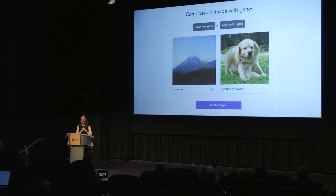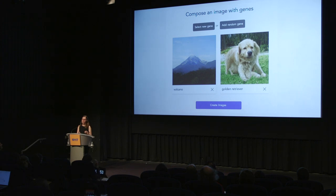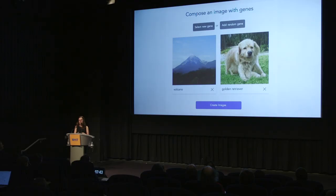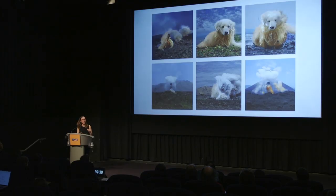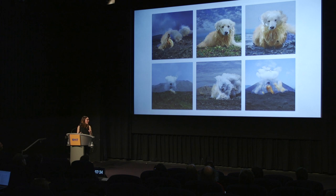Basically, all these images from ImageNet were classified into different categories, and those categories are turned into models. So a computer can generate what a typical volcano is or a typical golden retriever is — there are a thousand categories. Not only can it do individual categories, but it can merge categories together, so I can create a volcano golden retriever.